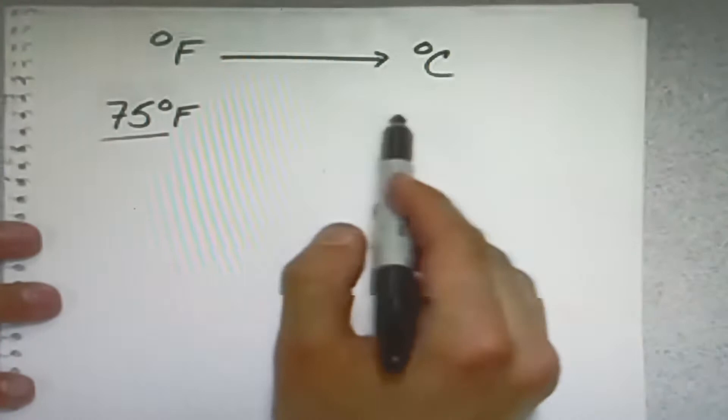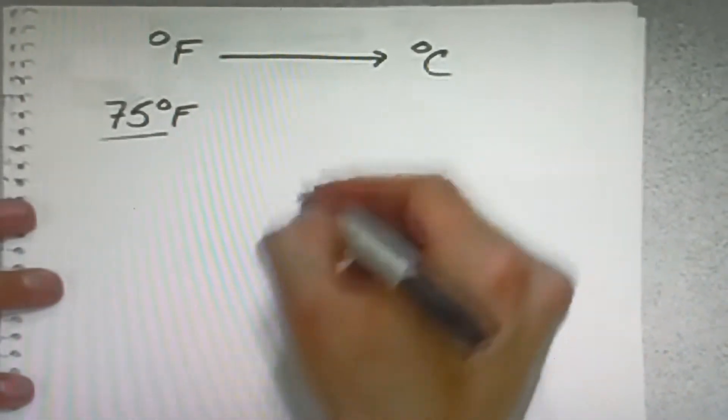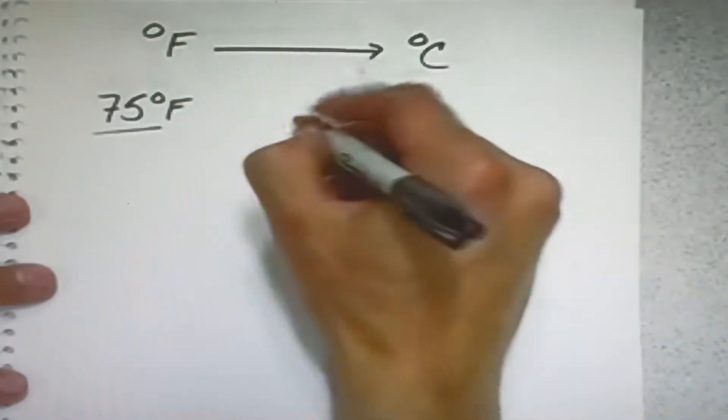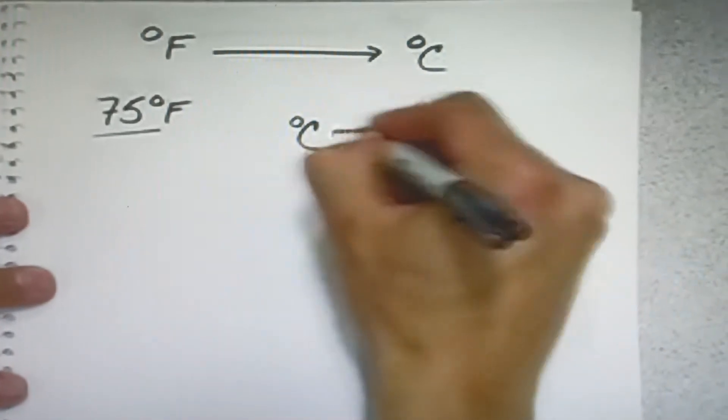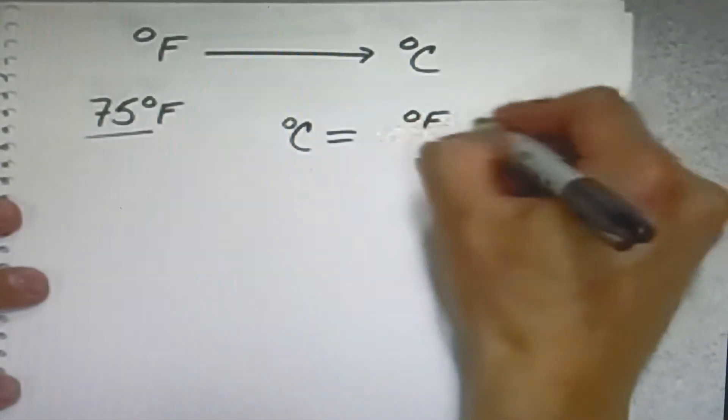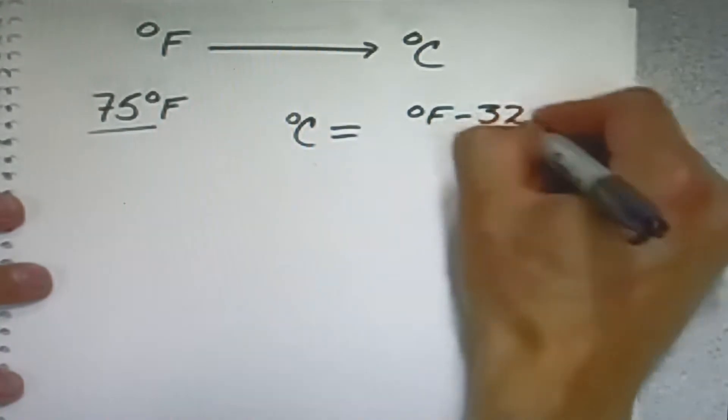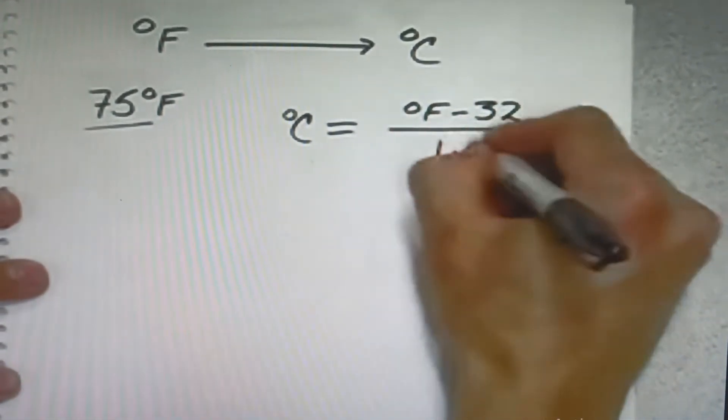So we're going to convert that. Our equation for the conversion is degrees Celsius equals degrees Fahrenheit minus 32 divided by 1.8.